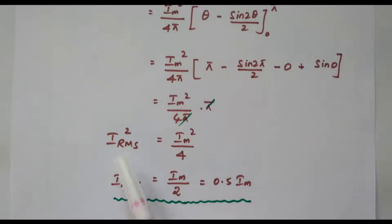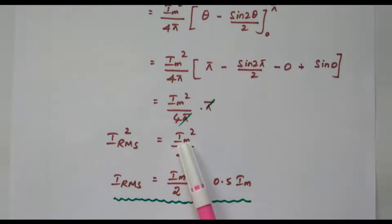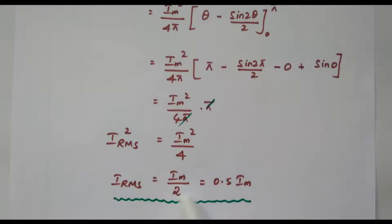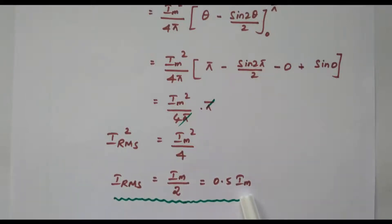Taking the square root on both sides: IRMS = Im/2. The square root of Im² is Im and the square root of 4 is 2. So 1/2 = 0.5, meaning IRMS = 0.5·Im. The RMS value of current for a half wave rectifier is 0.5 times the maximum value Im.